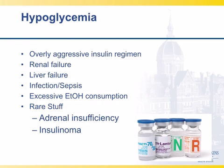Hypoglycemia is not an uncommon cause for us to get called for alteration of mental status. Causes include overly aggressive insulin, renal failure, liver failure, sepsis, infection, and too much alcohol use. Adrenal insufficiency and insulin-producing tumors are less common but occur every now and then. So when you see somebody who is altered and sweaty, you want to think about a finger stick.